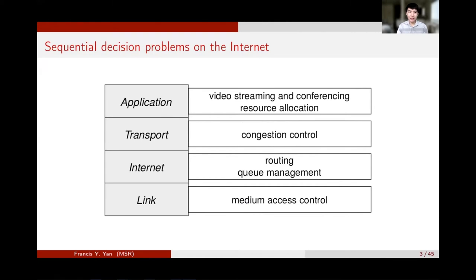In fact, such sequential decision problems are pretty common in networking research from the application layer to the link layer. Each problem here has been extensively studied in the past. My research at Stanford focused on two of them: video streaming and congestion control. However, before describing them, let's look at why sequential decision problems on the internet are challenging and worth studying.